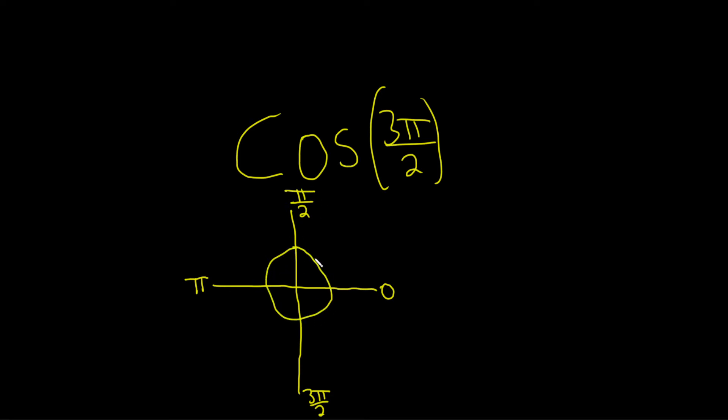So on the unit circle, every single ordered pair has the form cosine θ, comma, sine θ. So we're interested in the angle 3π over 2. So we're interested in this point here.